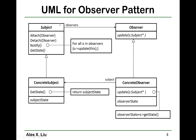Here you have two base classes: one is a subject and the other is observer — both are abstract classes. In the subject, you have three functions common to all concrete subjects: attach an observer, which basically adds an observer; detach an observer, which deletes an observer. You probably need to have a vector of observer pointers. And here you have another function: notify.